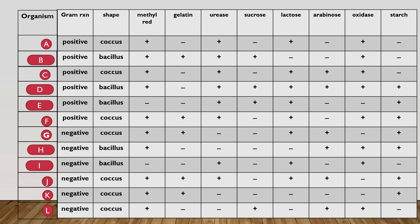Now notice that this table will list the gram reaction, meaning positive or negative, as well as the shape of the organism. The table also lists various biochemical tests. So that's what it says by methyl red, gelatin, urease, etc., all the way to starch.